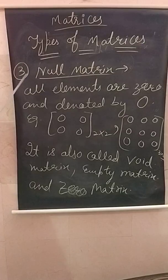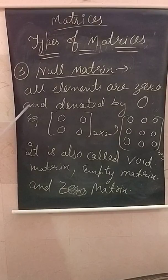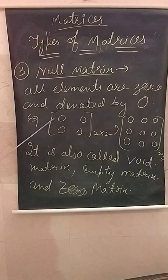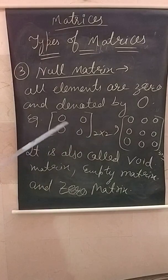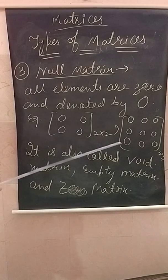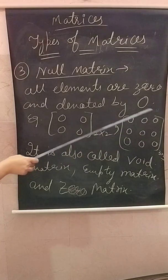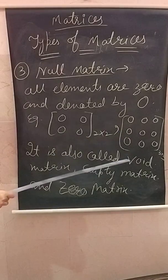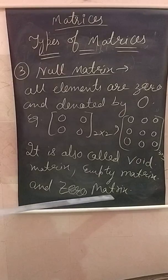The next type is the null matrix. In this matrix, all elements are zero. For example, a two by two matrix with all elements zero is called a null matrix. Similarly, a three by three matrix with all zeros is also a null matrix. These matrices are also called void matrix, empty matrix, or zero matrix.